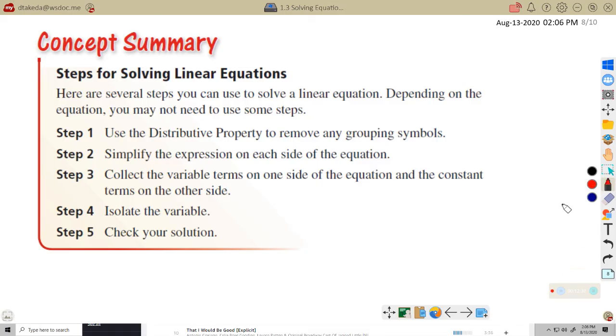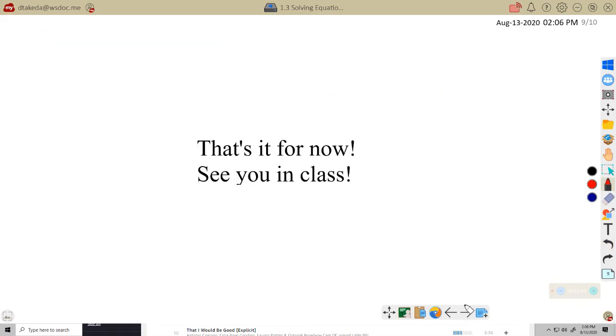Get these into your notes. This is just something I don't want to save for class. It's basically a wrap-up of everything we've done here in the first few lessons. Steps for solving linear equations. Distributive property to remove grouping symbols. And then simplifying the expression on each side. Collecting variable terms on one side of the equation and constant terms on the other. That's what we just did. If there's variables on both sides, isolating the variable. This is the solving part. And then checking your solution. Just double-check to make sure that whatever answer you come up with makes the original equation true.